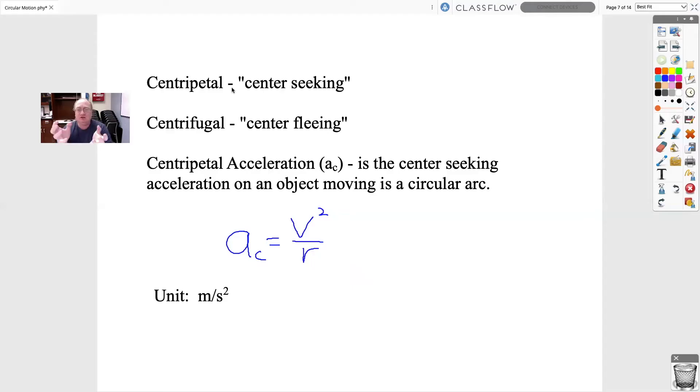We've got centripetal acceleration, and centripetal acceleration is the inward acceleration. Remember, this acceleration, this force is always towards the center of the circle. And we can calculate that by simply taking the linear velocity, squaring it, and dividing by the radius. And since this is an acceleration, it's still meters per second squared.